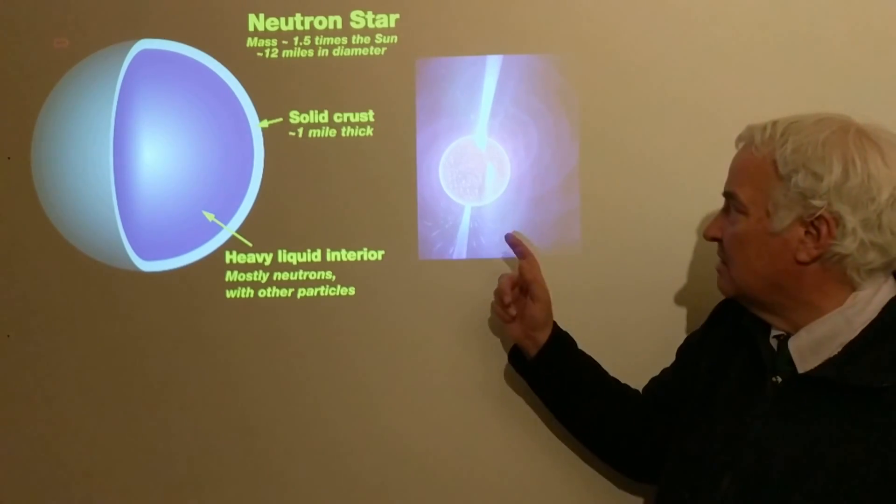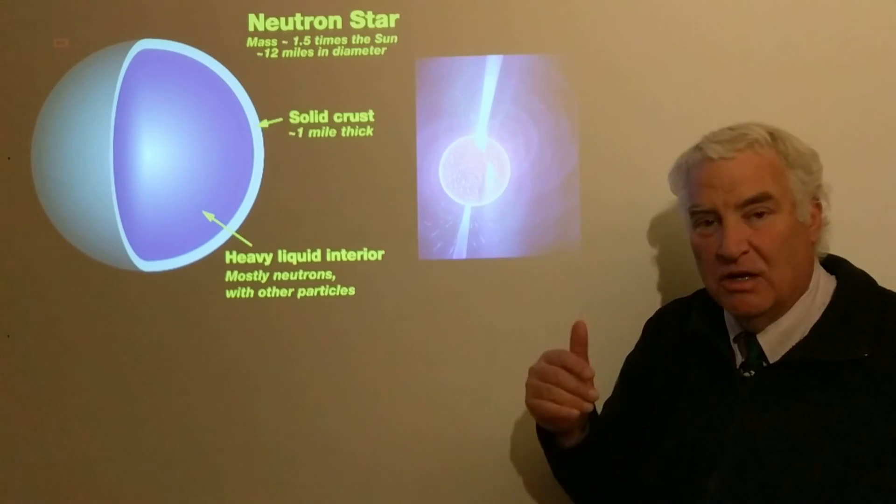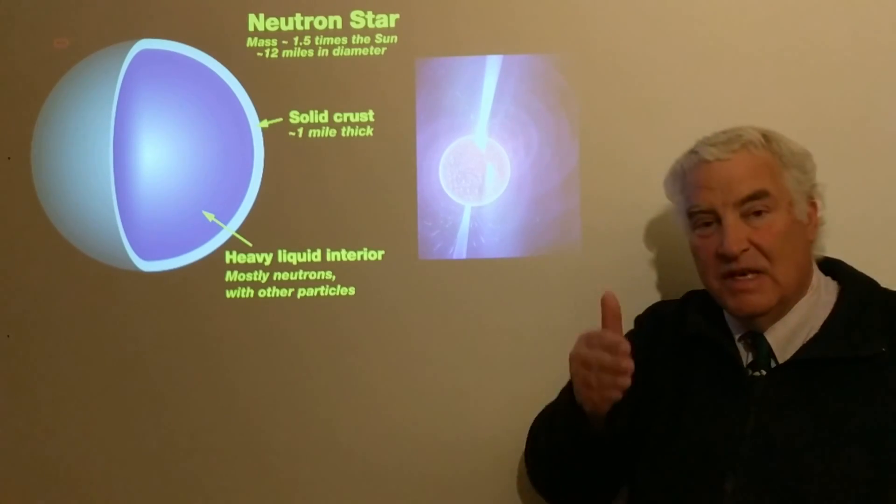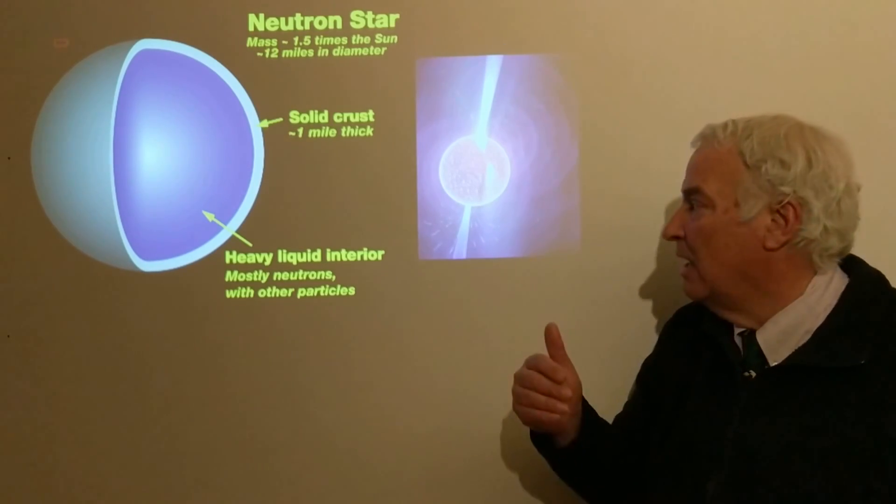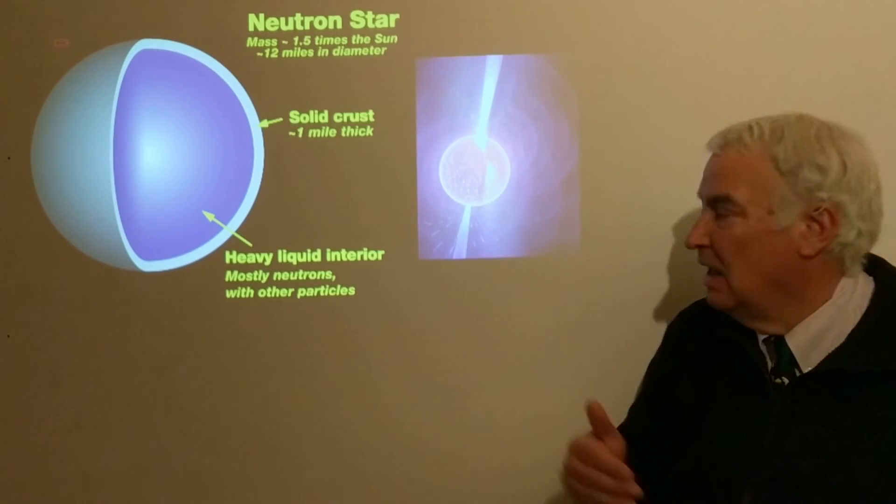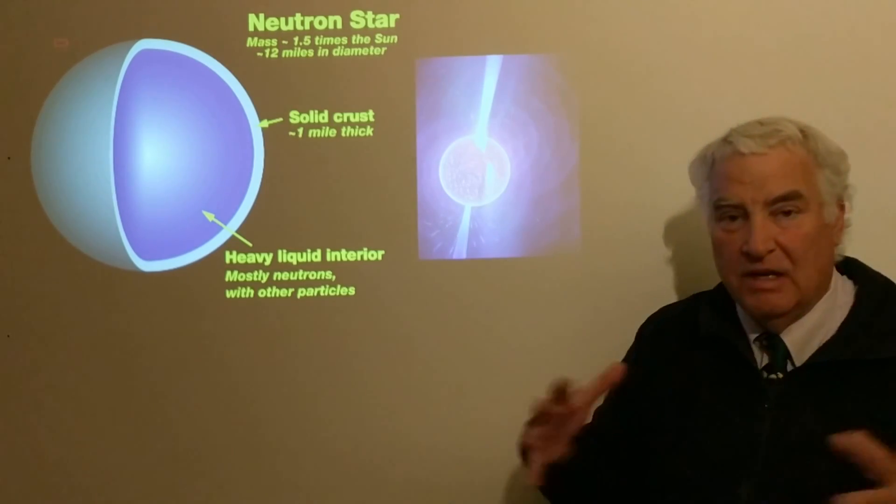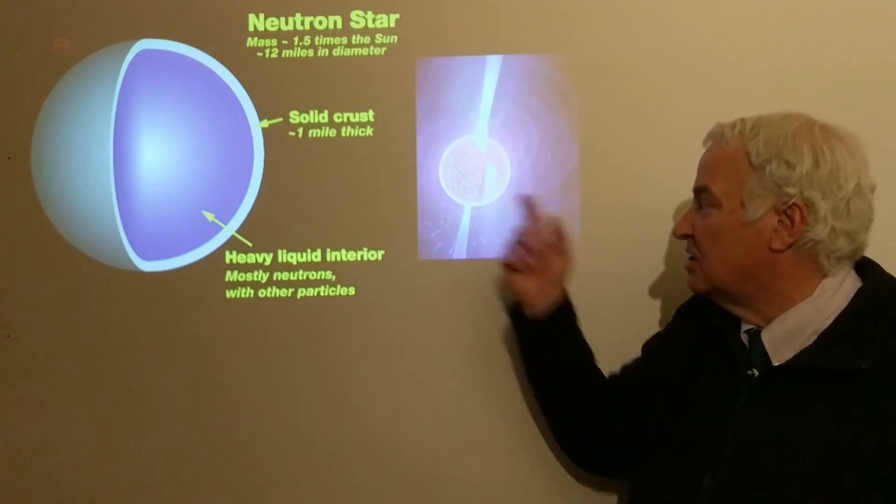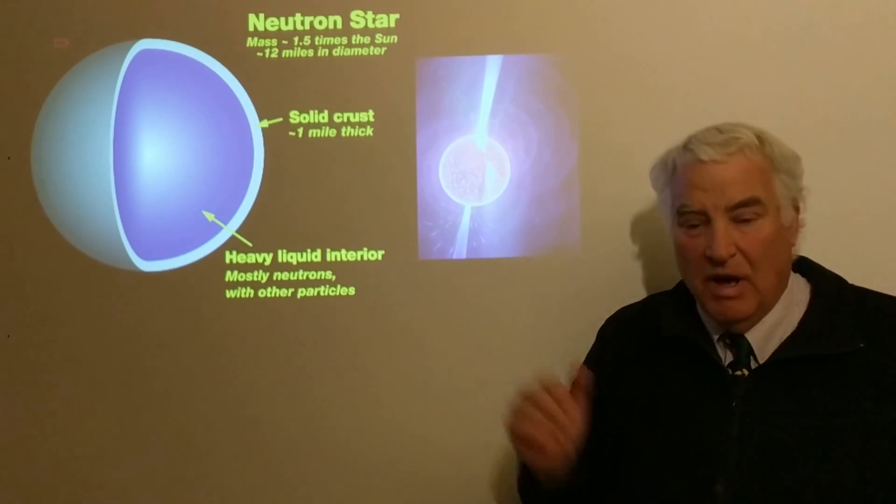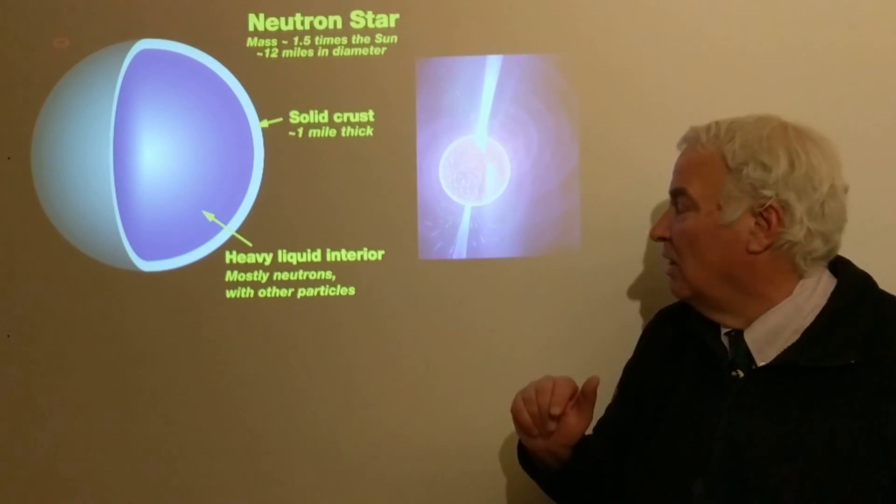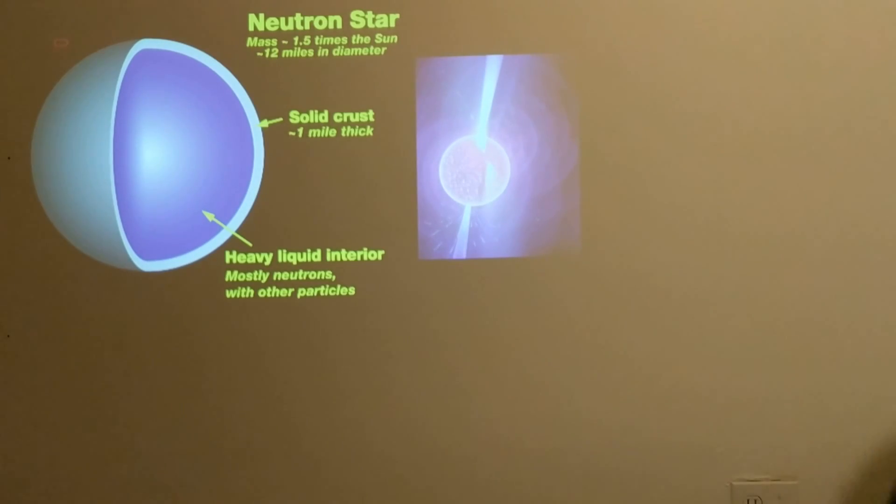The beams of light are like here, and as the star spins, maybe the beam of light will flash in the direction of earth. If so, we see a pulse of light. This is why this is called a pulsar. It's not pulsing in some way or vibrating—it's just spinning with these beams of light that periodically cross into our view.